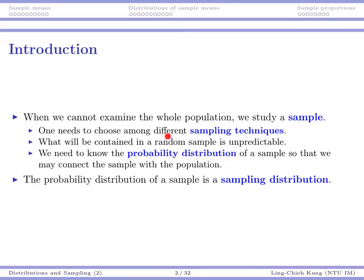We need to choose among different sampling techniques — something we mentioned in the previous lecture. And whenever you are using random sampling, what you will see as a sample will be unpredictable. Basically, your sample is random because you don't know what you will collect.